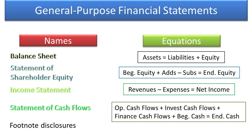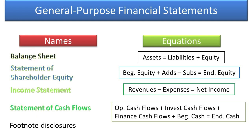You should already know these equations. We haven't dug into them in detail yet, but as long as you know these equations, we're at a good starting point and we can work from there. What we're going to do in this topic is show you how these three financial statements — the statement of shareholder equity, income statement, and statement of cash flows — explain how a company's assets, liabilities, and equity change from one year to the next.